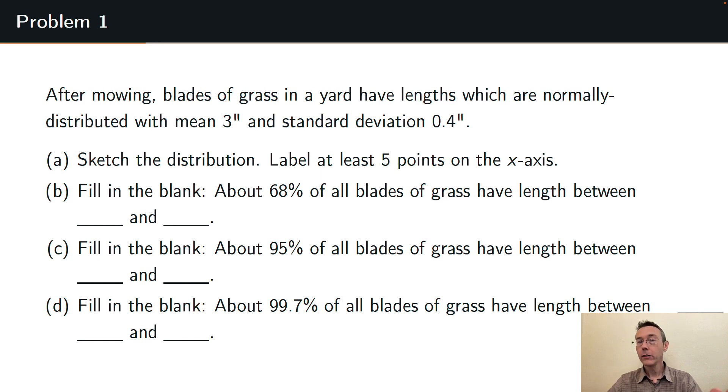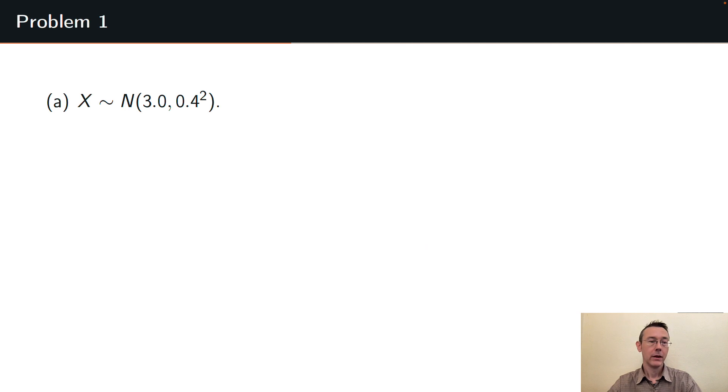The normal distribution is going to be symmetric. The mean is going to go right in the middle and that standard deviation is going to give us a measure of spread. That's going to be the distance from the center of the distribution to the inflection point on the graph. So remember your notation for the normal distribution N(mean, variance) and here I've written the variance as 0.4 squared, the square of the standard deviation.